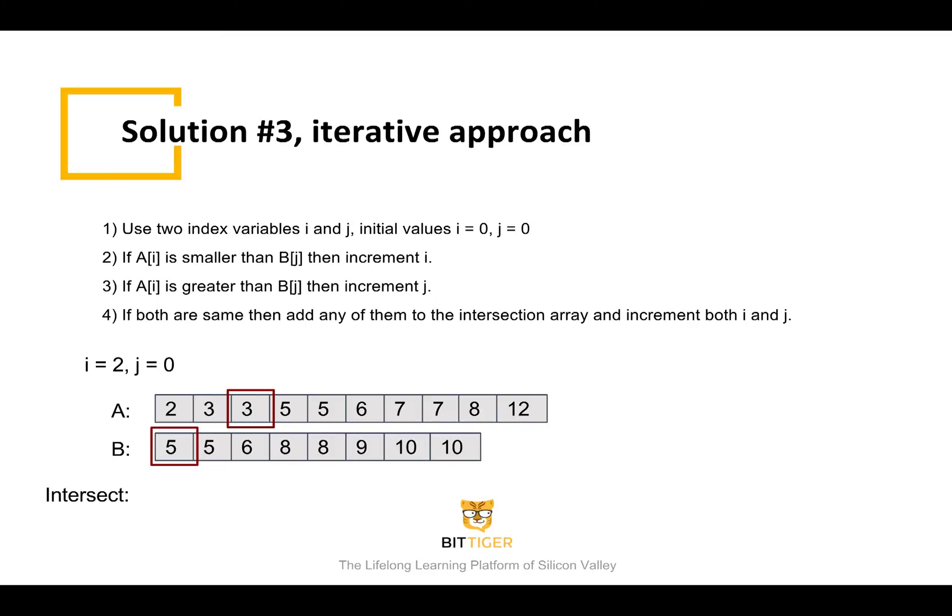Now i is equal to two, and j is equal to zero. A of two is equal to three, and b of zero is equal to five. Three is smaller than five, so we need to increment i to three.